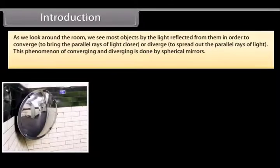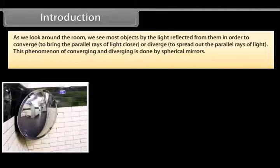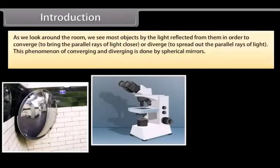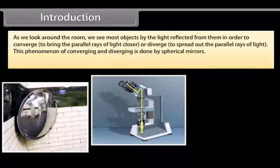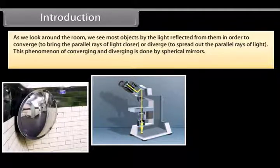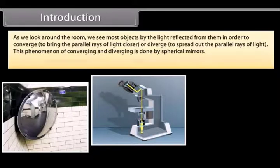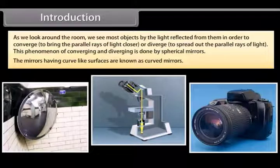As we look around the room, we see most objects by the light reflected from them. In order to converge and bring the parallel rays of light closer, or diverge to spread out the parallel rays of light, this phenomenon of converging and diverging is done by spherical mirrors. The mirrors having curve-like surfaces are known as curved mirrors.